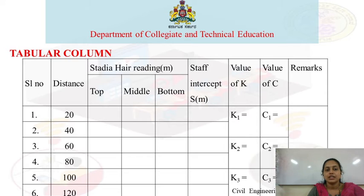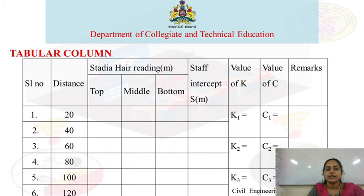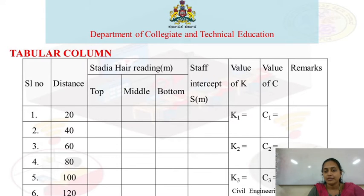The tabular column includes serial numbers for the 6 pegs. Each peg is at a 20-meter distance, totaling 120 meters for all 6 pegs. Stadia hair readings — top hair reading, middle reading, and bottom hair reading — are recorded. Staff intercept is obtained as top hair reading minus bottom hair reading.